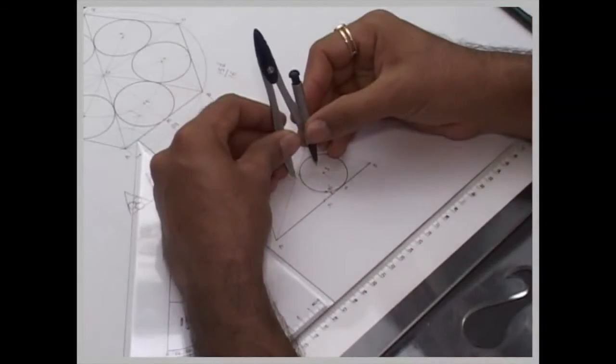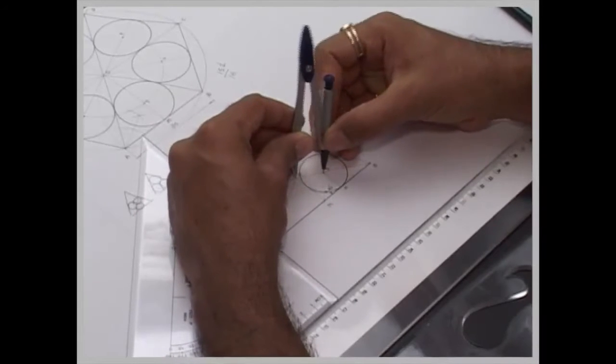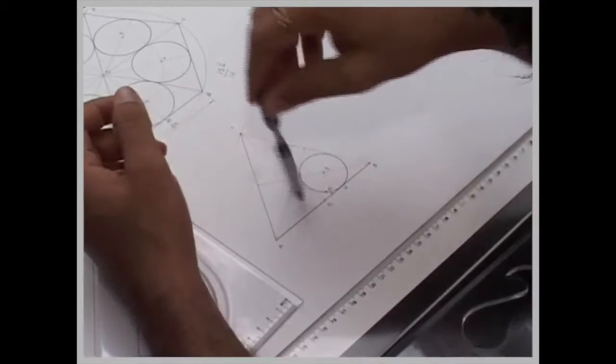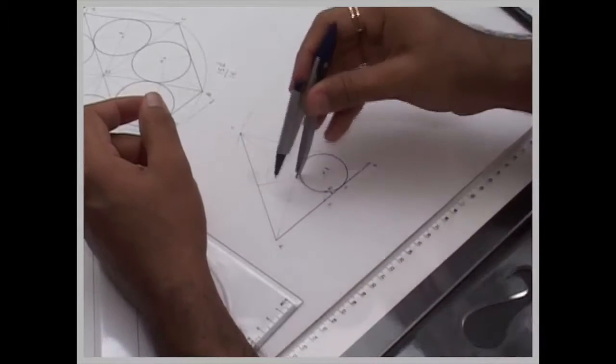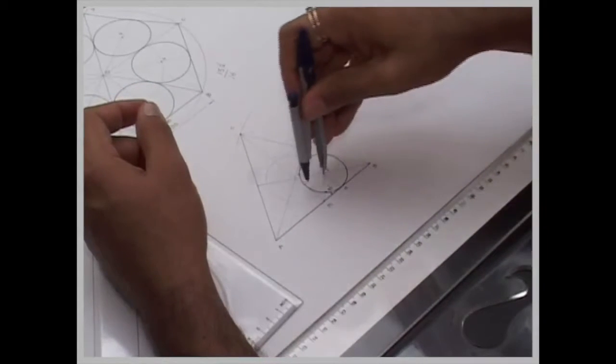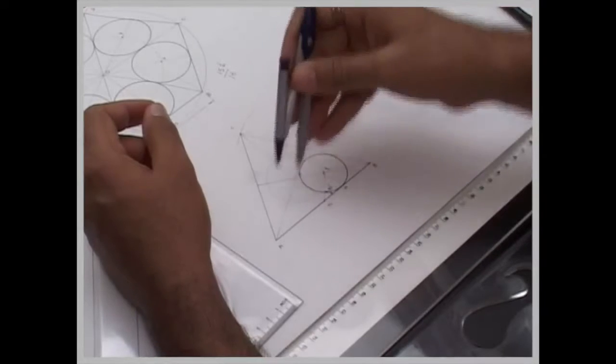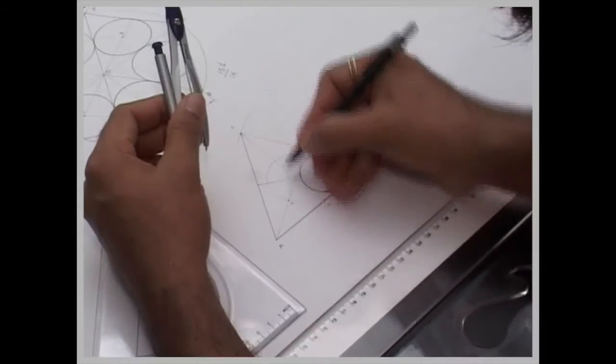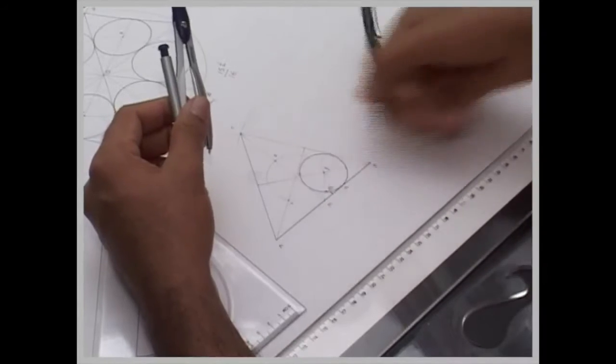then same method, we take 0 to 1, we will take the same radius, this is 2, this is 3.